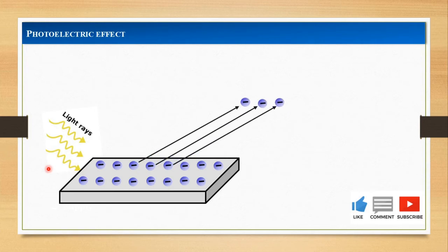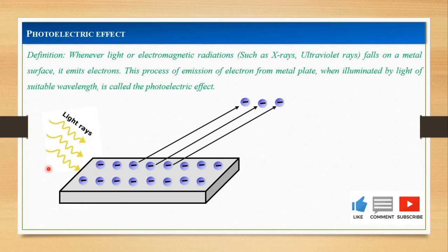This process of emission of electrons from the metal surface is called the photoelectric effect. Or we can simply define the photoelectric effect as: whenever light falls on photosensitive substances, it emits electrons. This process of emission of electrons from metal surface when illuminated by light of suitable wavelength is called the photoelectric effect.